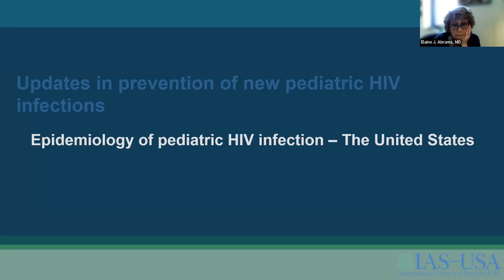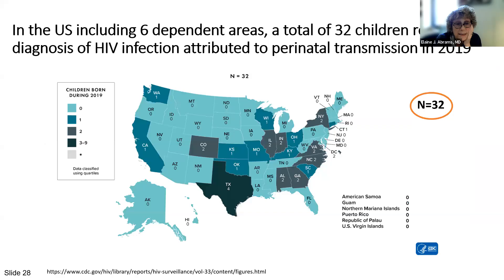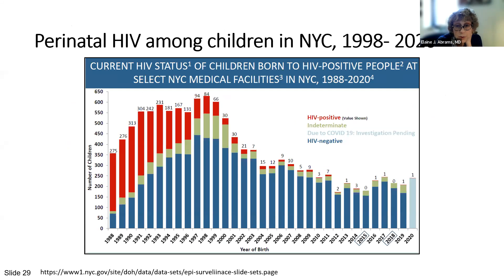Now pivoting to prevention of new pediatric infections in the US. In 2019, the last year with published data, 32 children received a diagnosis of HIV infection attributed to perinatal transmission in the US, including six dependent areas. 37 areas reported no perinatally acquired infections among infants. In New York City, the trajectory of the perinatal HIV epidemic shows that in the early 2000s, the number of new pediatric infection cases had dropped substantially, and new child infections are truly a rare event. From 2016 to 2020, less than 1% of infants born to women with HIV infection were determined to have HIV infection themselves.